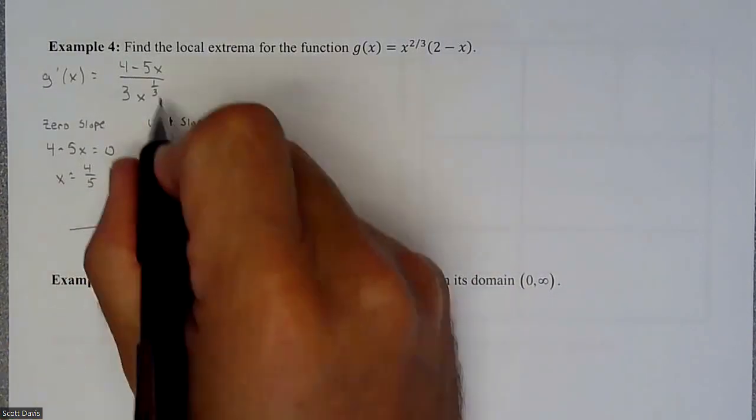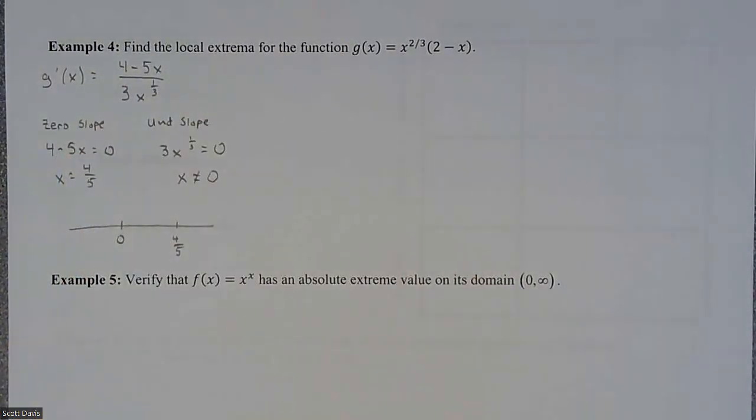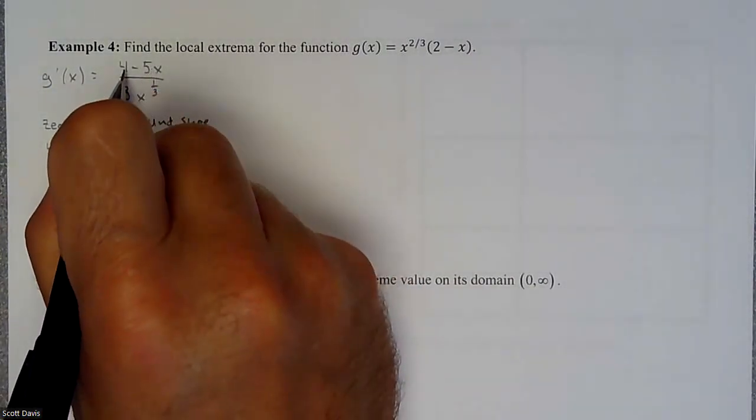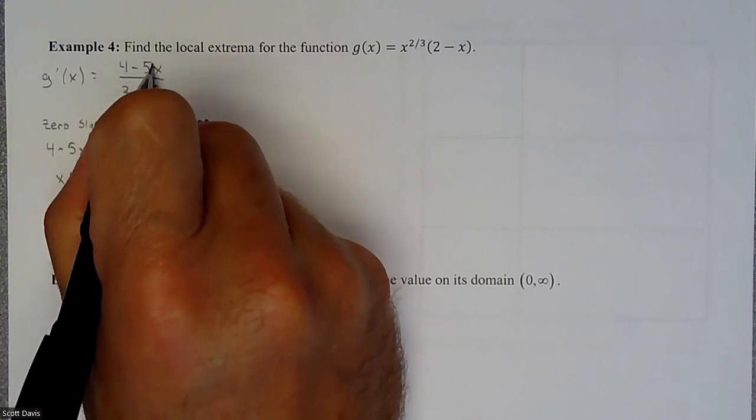All right, so let's test our sections. We have this fraction, we have our slope equation, and we're going to plug in a negative one, let's say. So if we plug in a negative one, that would make this a positive.